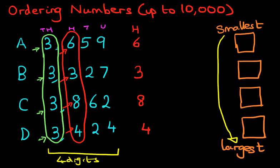Now, which is the smallest number here? Six, three, eight, four. The smallest number is three, and that is B. So we can write B over here. B is the smallest.